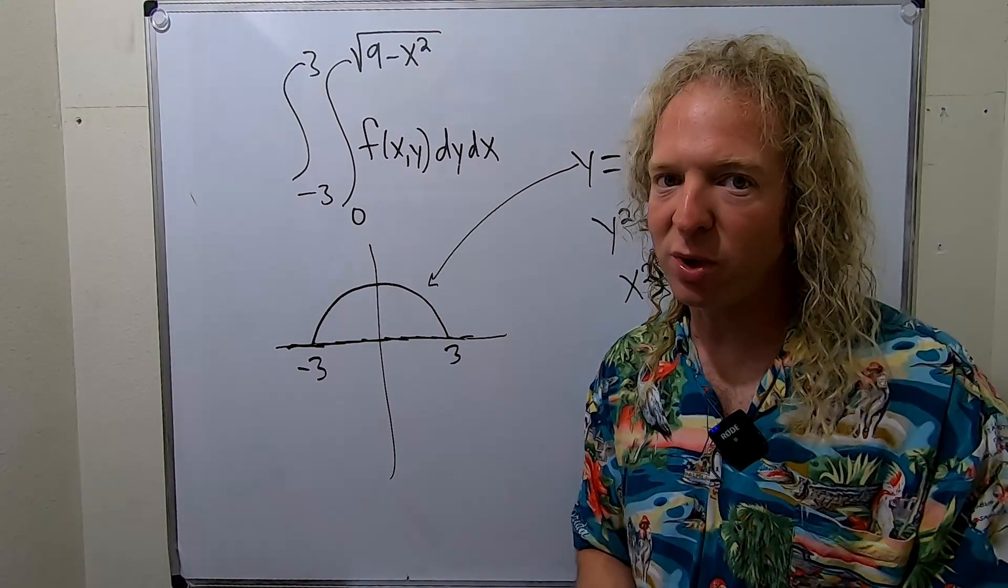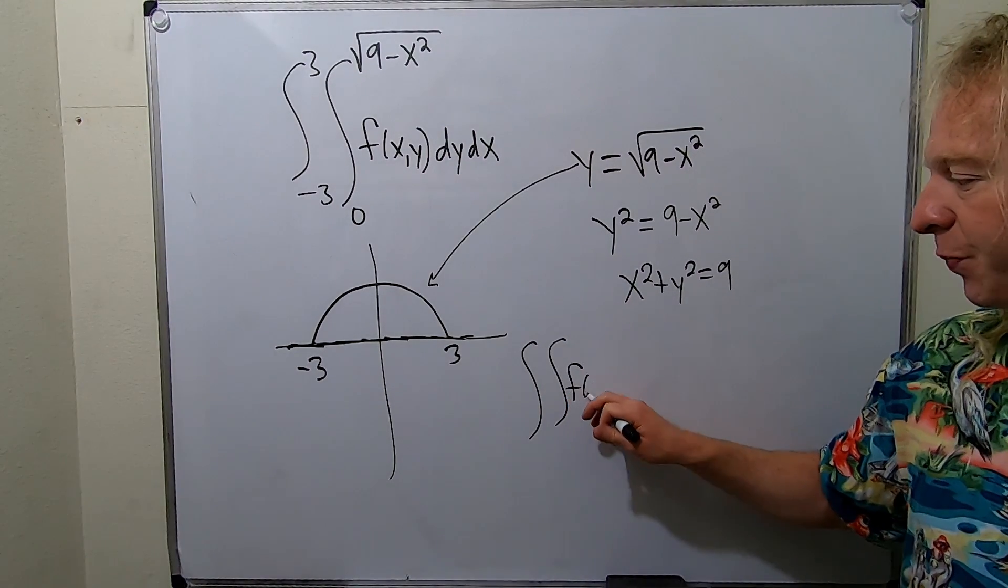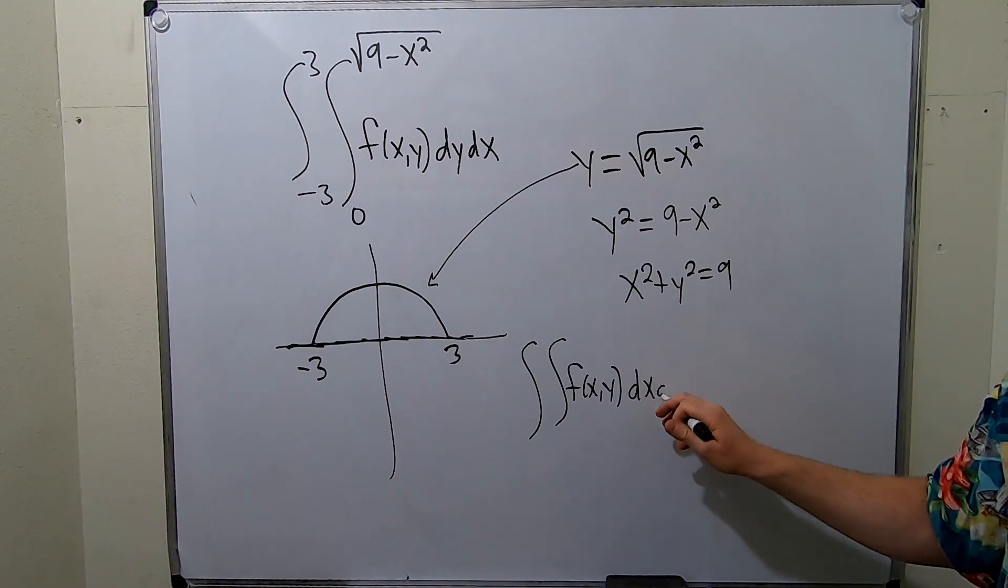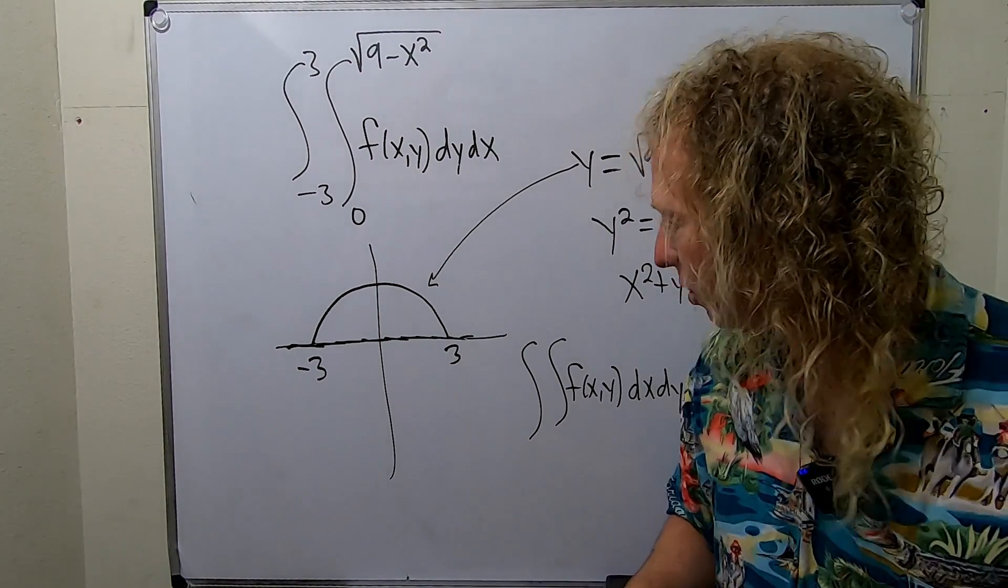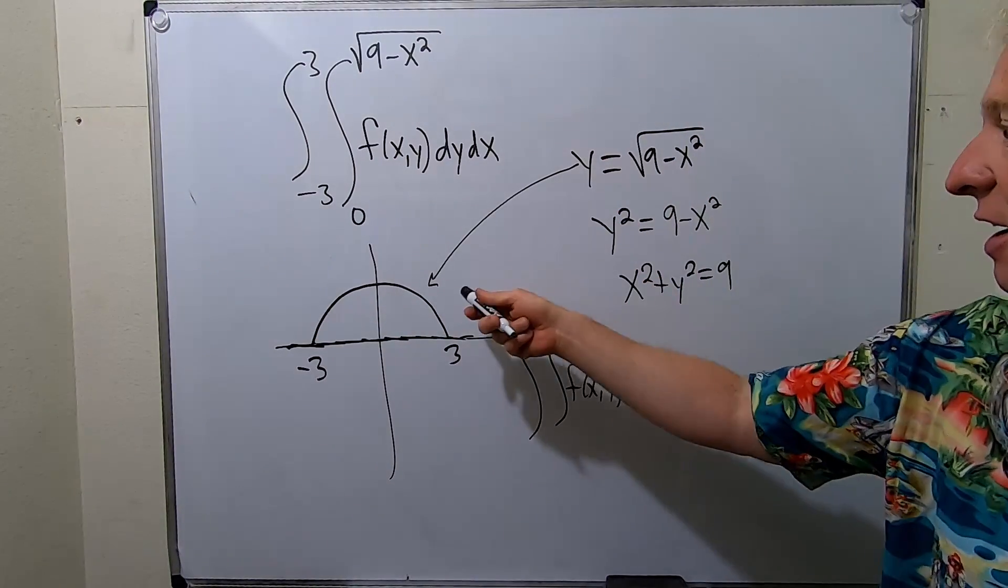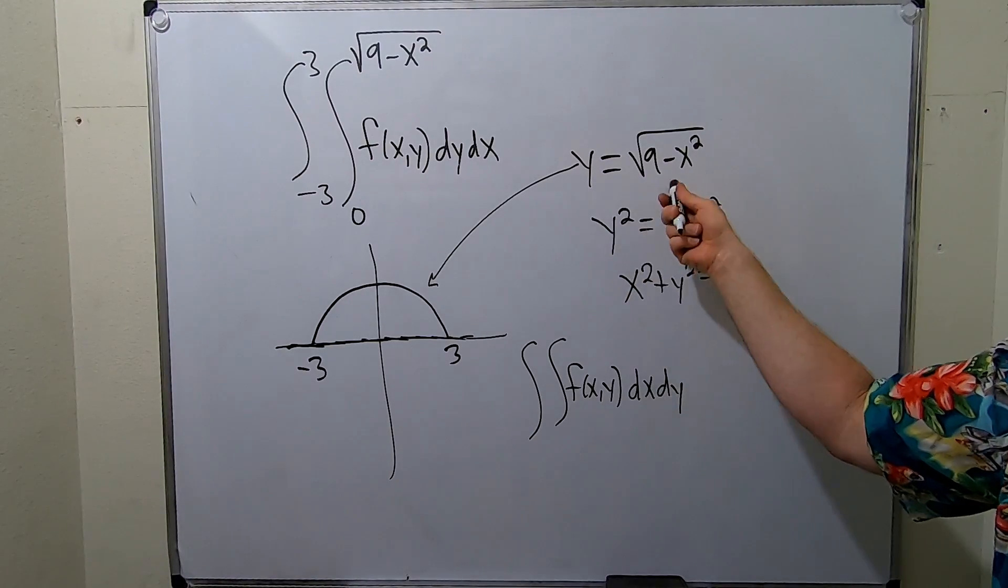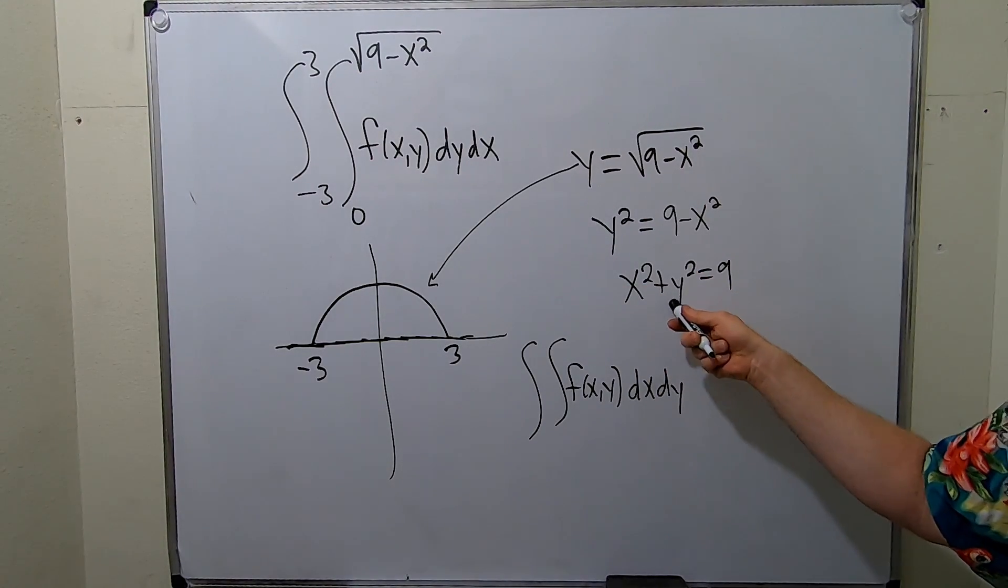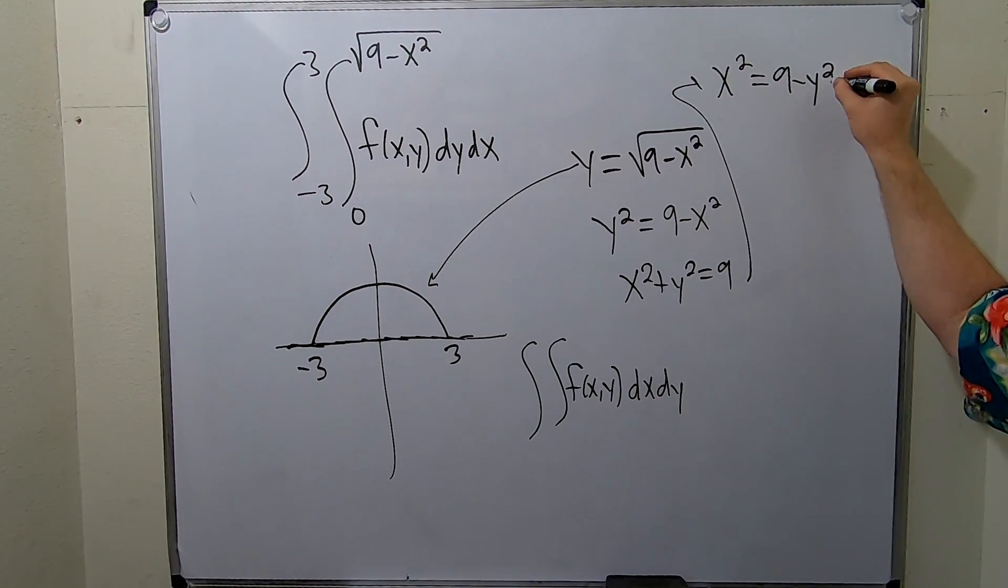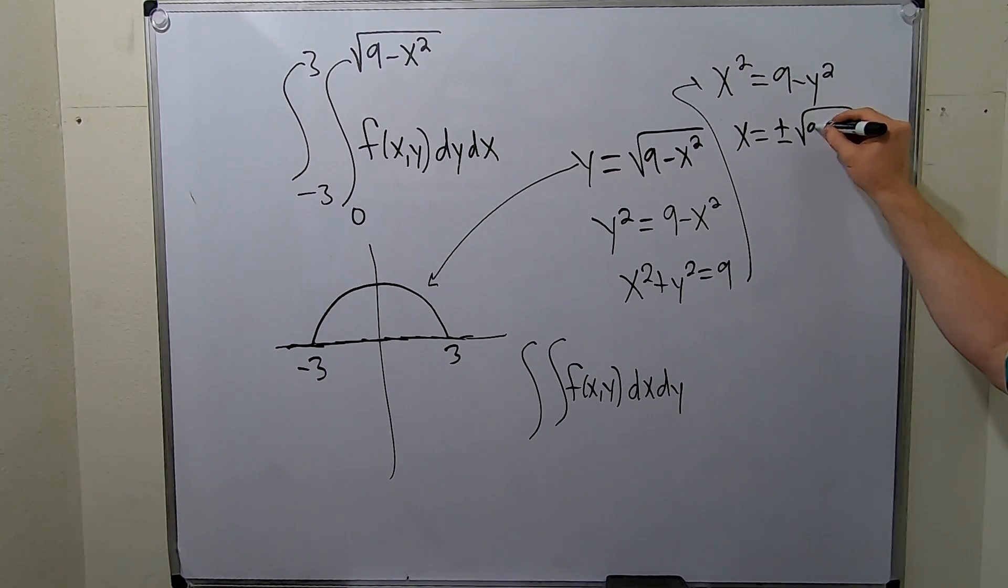Now we have to switch the order. So we have our integral of f(x,y) and we're going to do dx dy this time. To switch the order, first we're doing x then y. When we're doing x we have to think of this as a function of x. So we solve for x. We kind of did that here except we didn't finish. Now we'll subtract the y squared, so we get x squared equals 9 minus y squared. And when you take the square root you get x equals plus or minus the square root of 9 minus y squared.